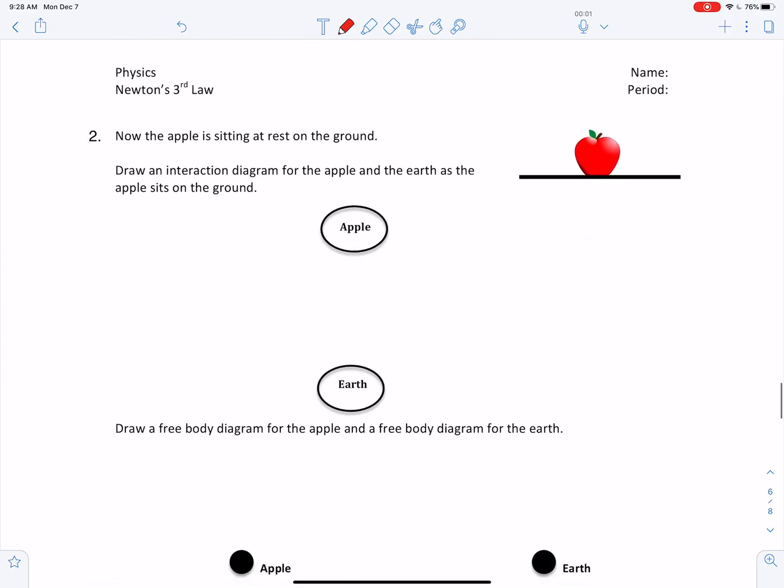Let's keep moving. What if now the apple is sitting at rest on the ground? Draw an interaction diagram for the apple and the earth as the apple sits on the ground, right? So now we've got the surface of the earth right here. The apple is still going to be interacting with the earth through gravity. But now there is an additional interaction. It is the normal force. So let's add that because they are now in contact, right? A normal force is a contact force.